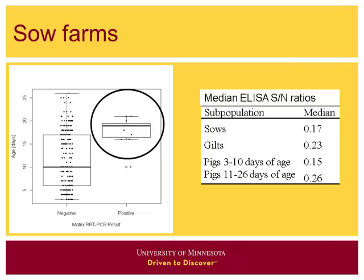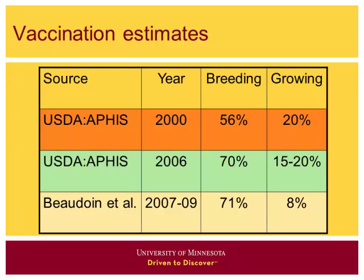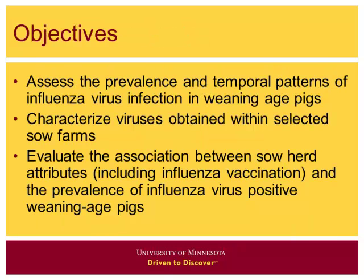When we talk about controlling influenza at the sow farm level, historical estimates show vaccination is fairly common within large sow farms — vaccination of breeding herd females is common compared to growing pig vaccination. Moving into this specific study, the major objectives were: one, assess the prevalence and temporal patterns of infection at the sow herd level in weaning age pigs; two, characterize those viruses obtained within sow farms; and three, evaluate associations at the sow herd level with weaning age pig results.